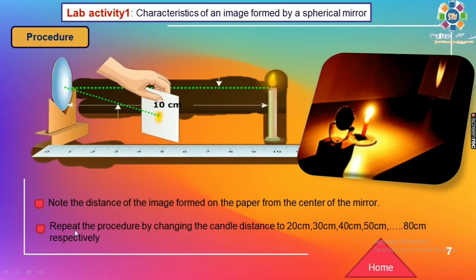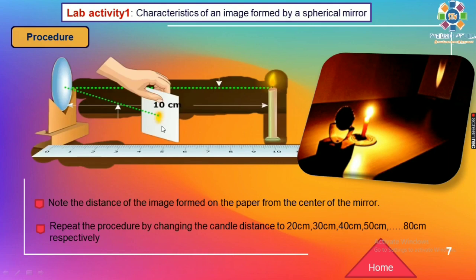In the next step, repeat the procedure by changing the candle distance to 20 cm, 30 cm, 40 cm, 50 cm, 80 cm, and so on. When we do this experiment by changing the candle distance — that is the object distance — we will get different image distances respectively.